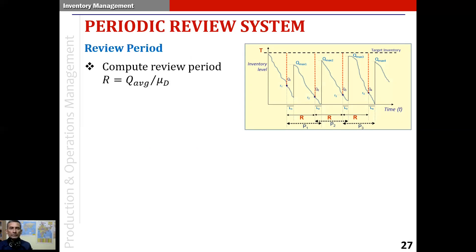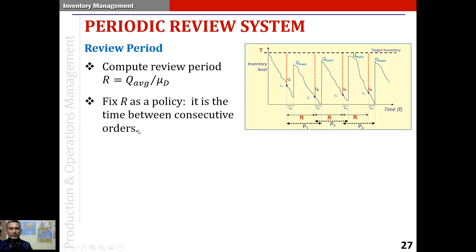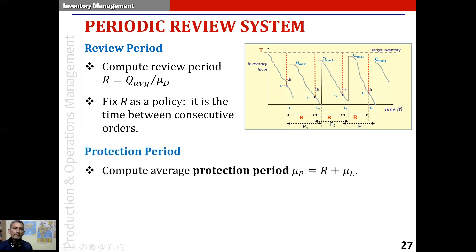Next, we compute the review period. We take the average order quantity that we just computed and divide it by the mean demand — the mean rate of demand. This ratio, Q-average divided by average demand, gives us the review period. This review period is fixed as a policy; it essentially represents the time between consecutive orders.